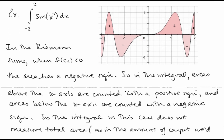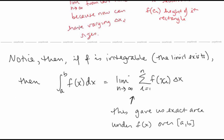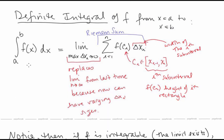So the integral in this case does not measure the total area — like the amount of carpet needed to cover the shaded region. The integral gives a net area: it counts areas above the x-axis with a positive sign and areas below the x-axis with a negative sign. But it's still a very useful computation, which is why we have this definition of the definite integral.